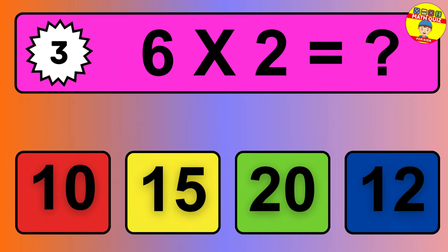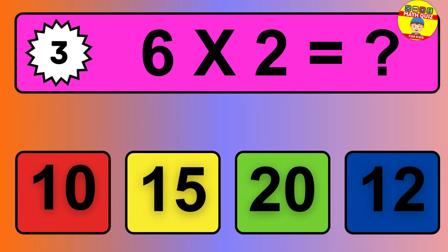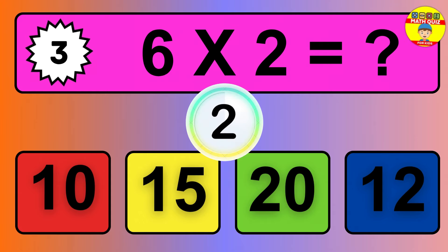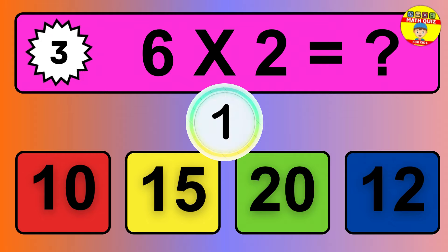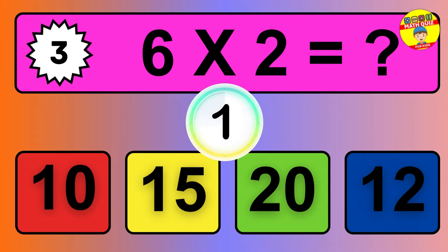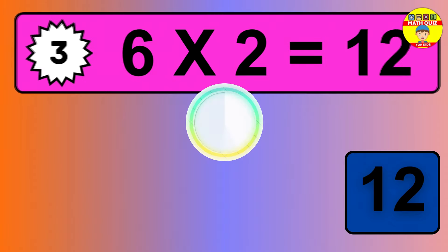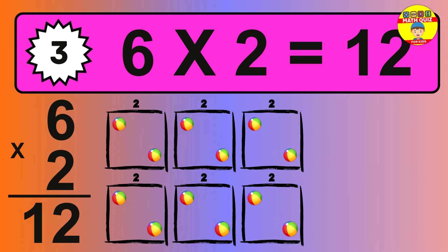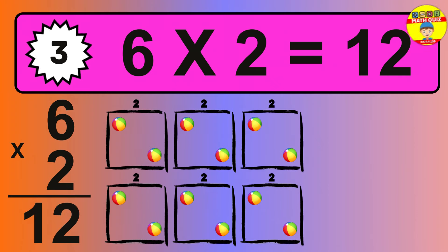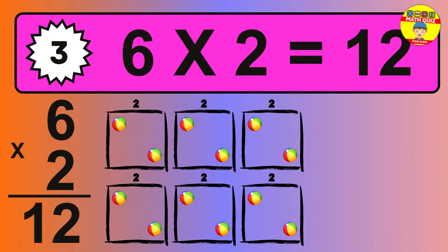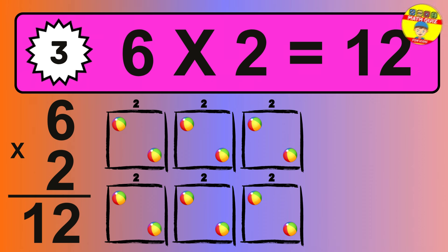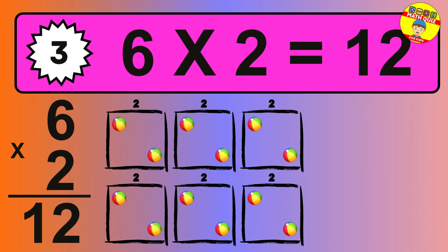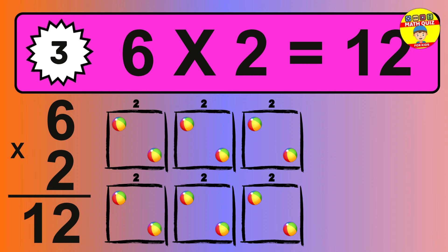Question 3. 6 times 2 equals what? The answer is 6 times 2 is 12. To calculate, we have 6 groups with 2 balls each one. So how many balls do we have? 12 balls.